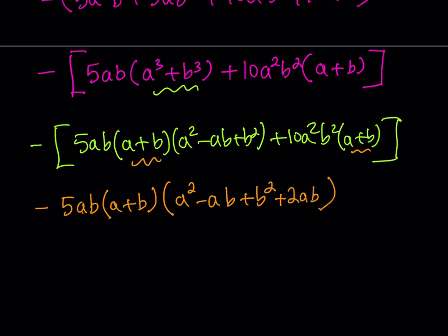I think this is it. We took out the 5 a b, a plus b, so this should be good. And then plus 2 a b, when I distribute that, it should give me that. If you want, you can put the negative sign all the way outside, but that's not necessary.